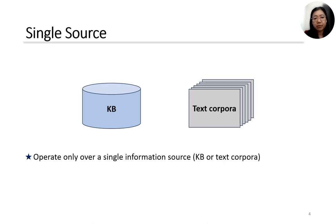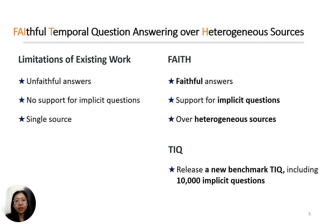Prior temporal QA systems operate only over a single information source — KB or text. To overcome these limitations, we propose FACE. FACE can provide faithful answers with explanatory evidence, transform implicit temporal constraints into explicit conditions, and is the first temporal QA system that operates over heterogeneous information sources. We also release a new benchmark including 10,000 implicit questions.